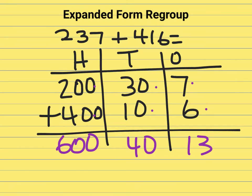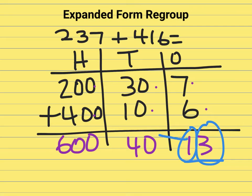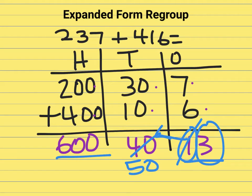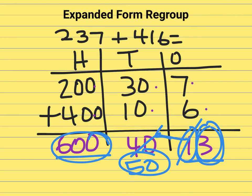I'll take a look at my numbers. The ones place can only have ones. So what happens is I need to take this 10 and push it over to the tens area. So 40 is now 50, and 13 is now 3. So I regrouped those numbers. The hundreds are perfect. So the answer is 653.